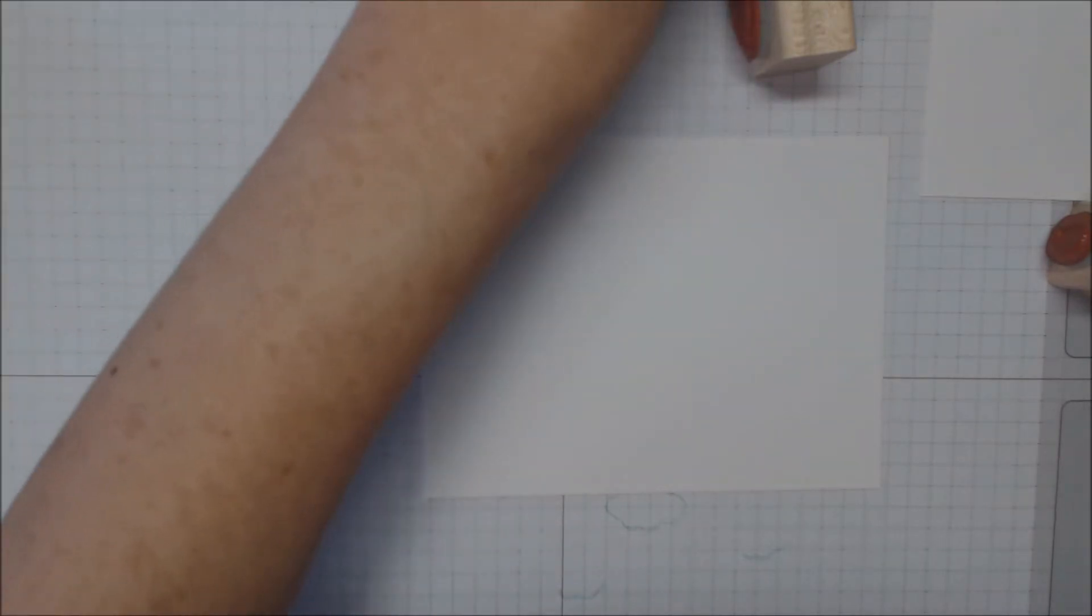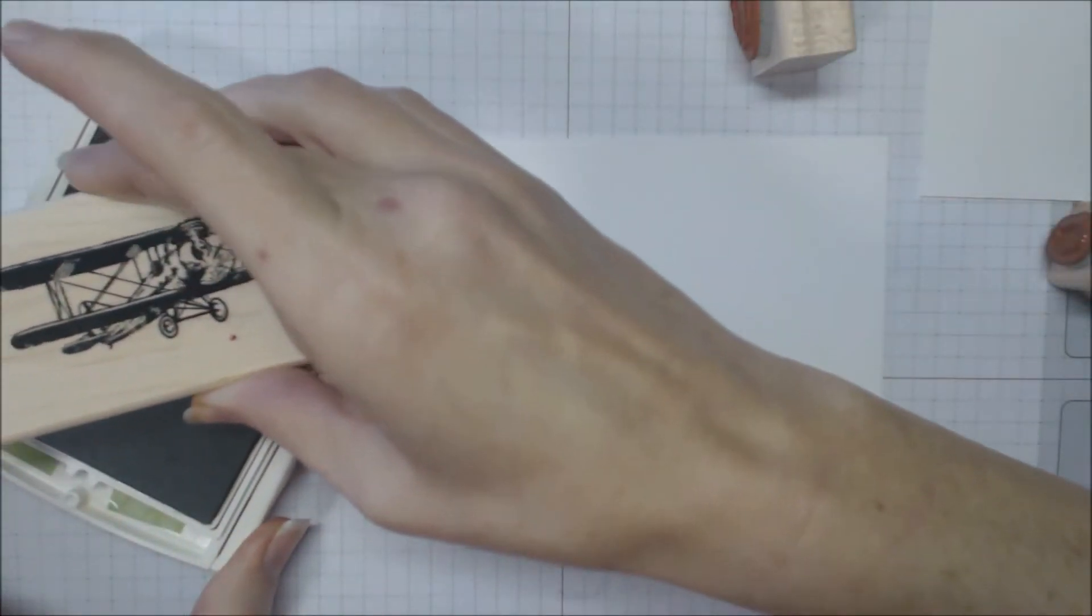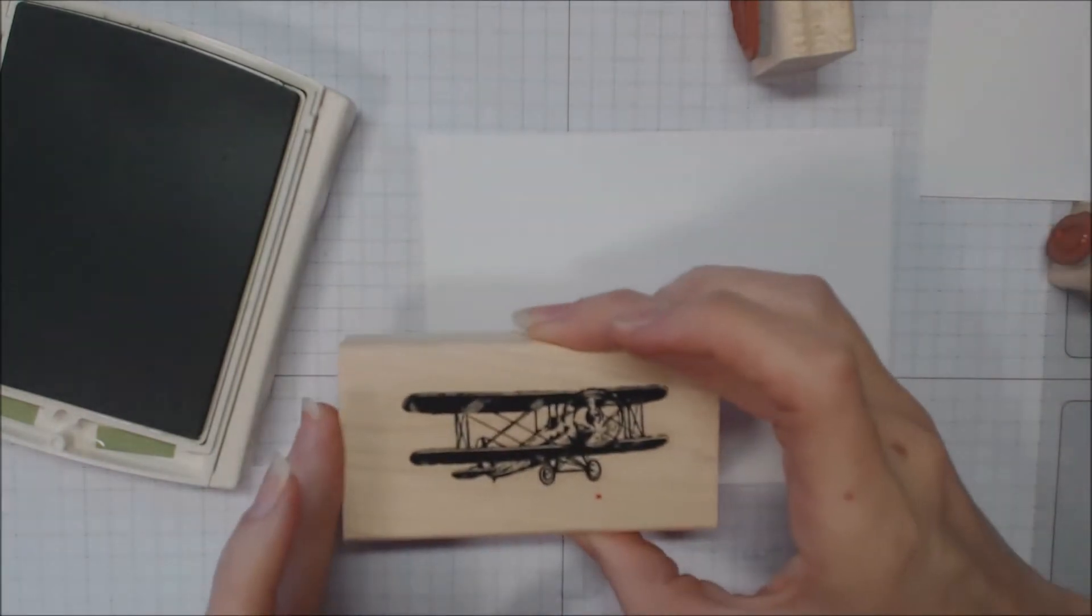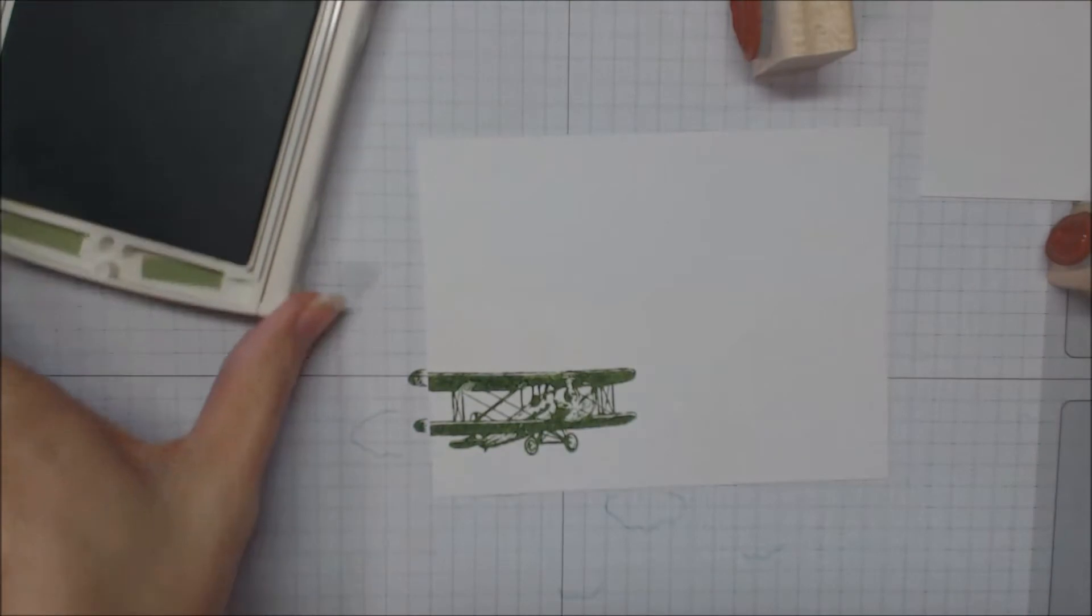This is whisper white, four inches by five and one-fourth, and we're going to bring in that Wild Wasabi and the airplane stamp again. Ink that up. I want to put the airplane down here kind of in the bottom left like I did the envelope.